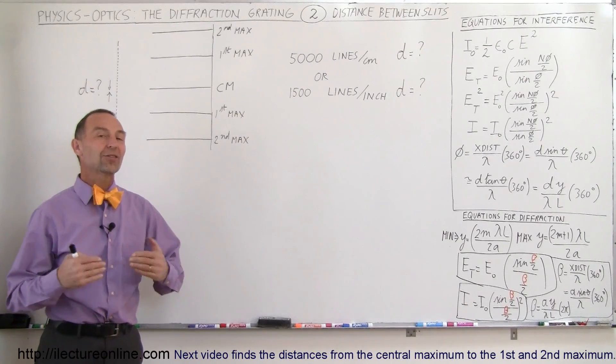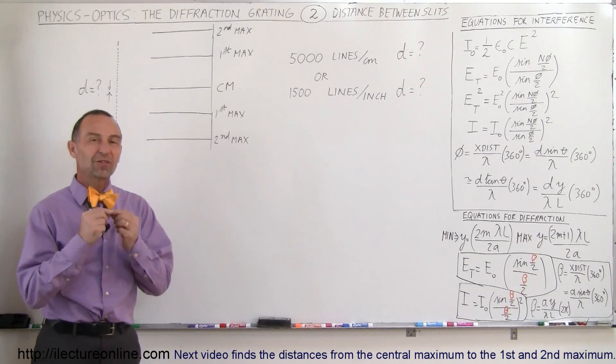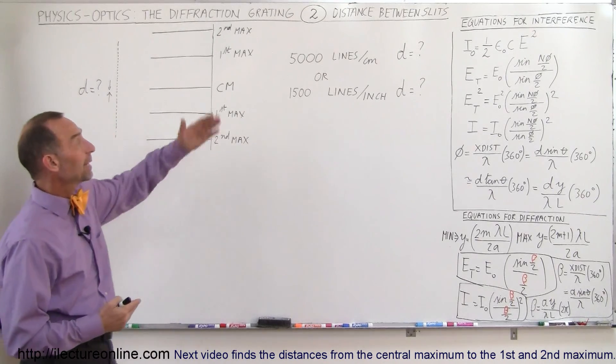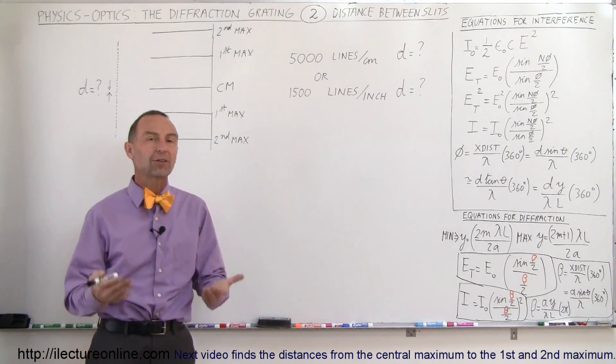Welcome to Electronline and now let's talk about the distance between slits and the diffraction grating. Typically they give you something like there are so many lines per centimeter or so many lines per inch.